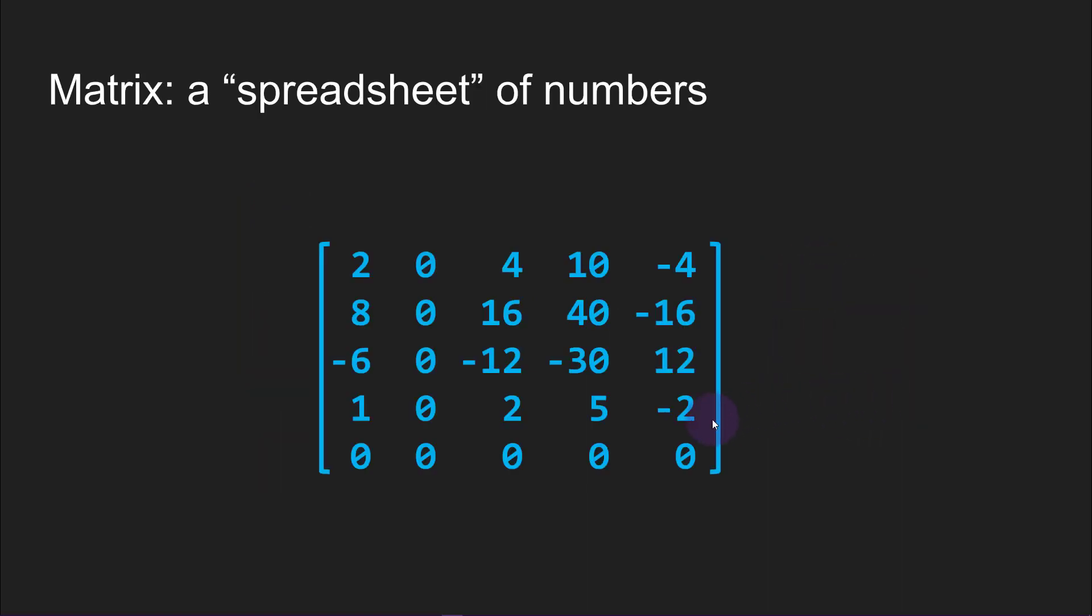A matrix is like a spreadsheet of numbers. In pure mathematics you can have infinitely long vectors and you can have matrices with an infinite number of rows and columns.